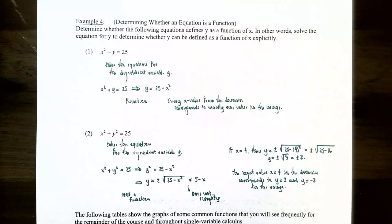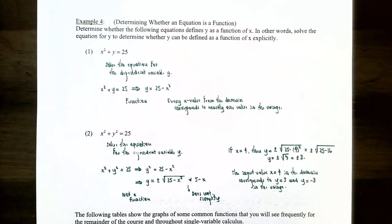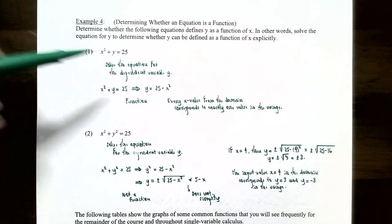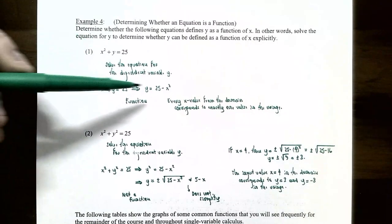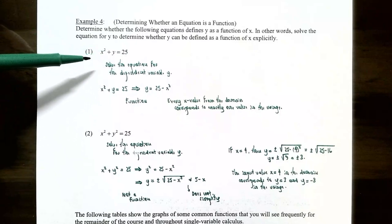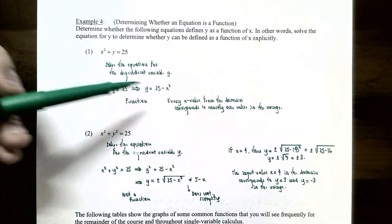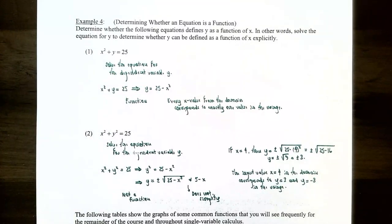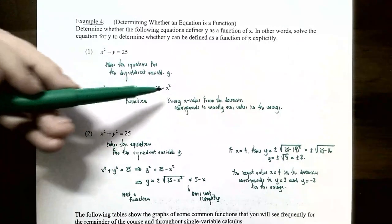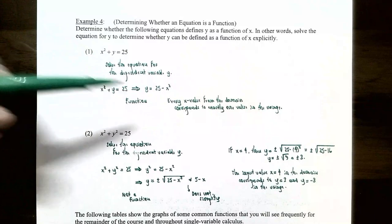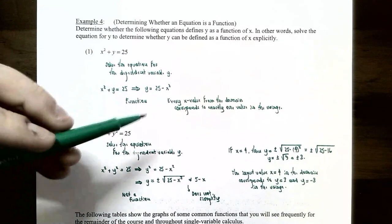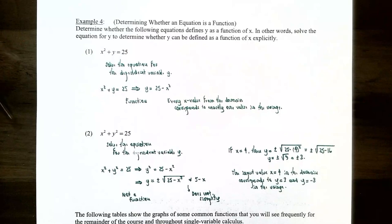In Example 4, for equation one: x² + y = 25. Solving for y by subtracting x² from both sides gives y = 25 - x². For any x value plugged in, we obtain exactly one y value. So this equation does represent a function — every x from the domain corresponds to exactly one y in the range.